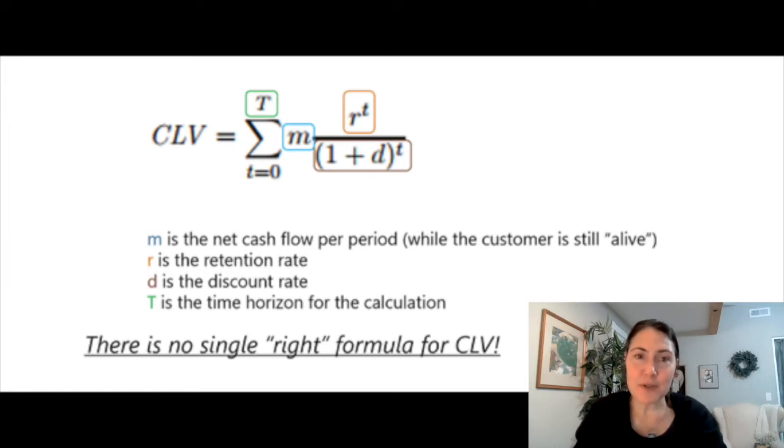M stands for margin, which is a constant. Some companies subtract customer acquisition cost to get a true net. And if we want to use CLV to estimate something like the upper bounds of spending, then that definitely needs to be excluded. But generally, we treat M as a constant because margin multiple only changes when retention varies.